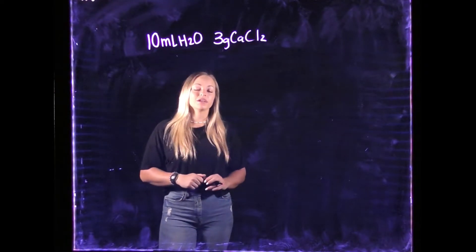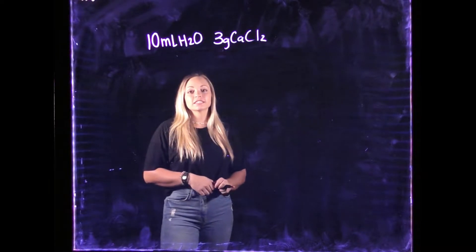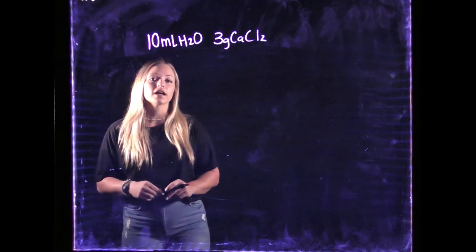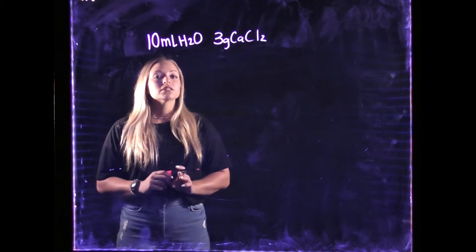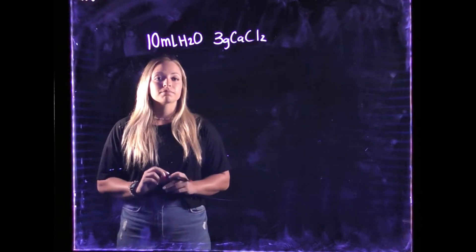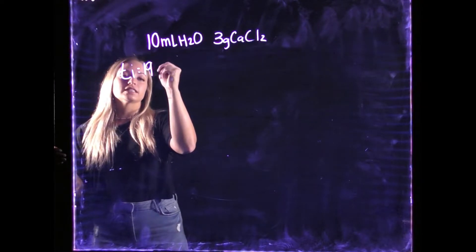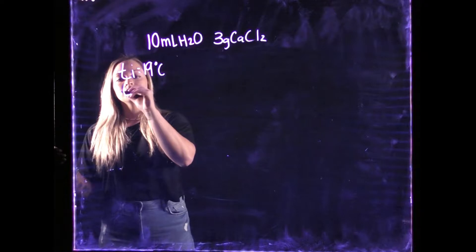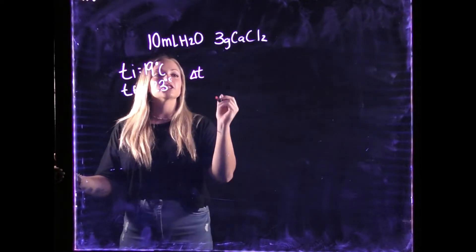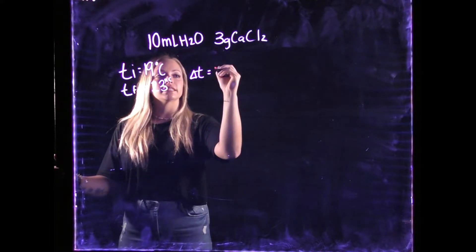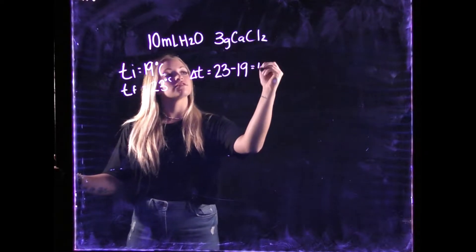For our first example problem, we are using an example from a previous video that showed how to use a calorimeter. We used 10 milliliters of water and 3 grams of calcium chloride. Our first step is to find the change in temperature. Our T initial was 19 degrees Celsius and our T final was 23 degrees Celsius. So, T final minus T initial gives us 23 minus 19, which is 4 degrees Celsius.